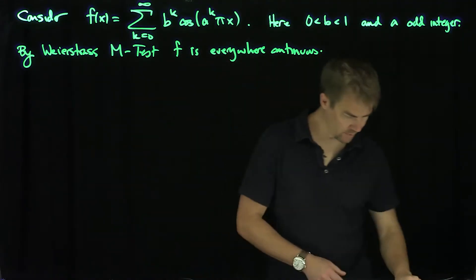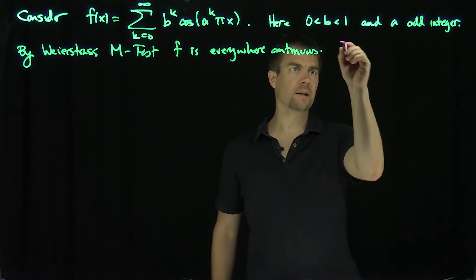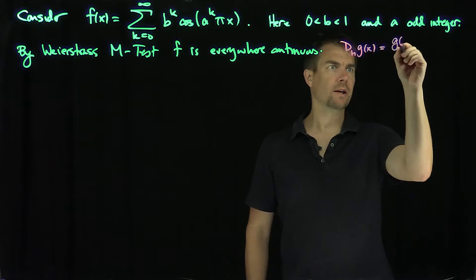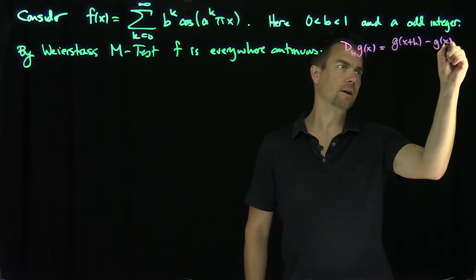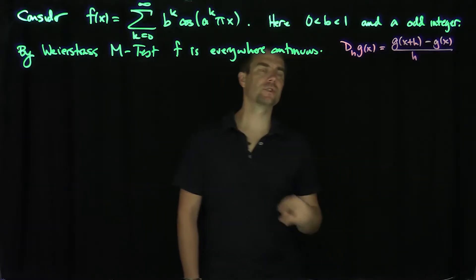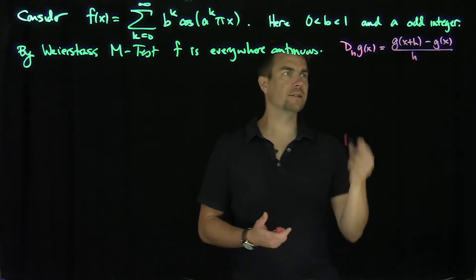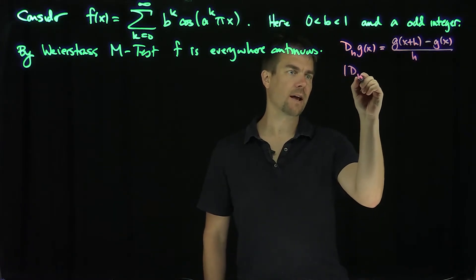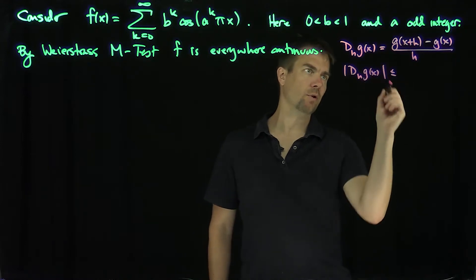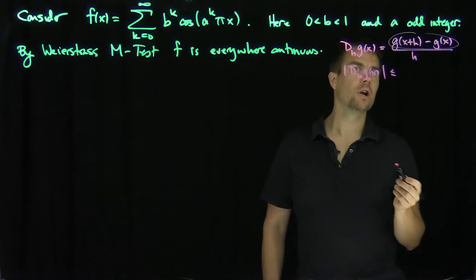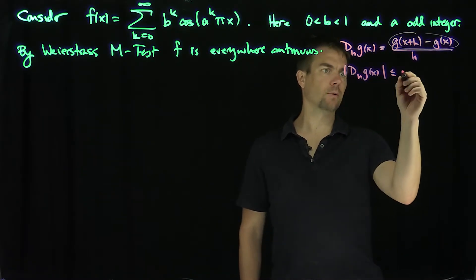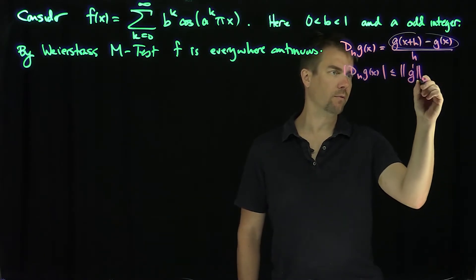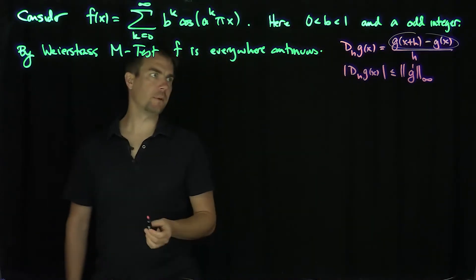Now I'm going to build some notation. I'm going to let d_h of g(x) — this operator d_h — be a forward differential quotient: g(x+h) minus g(x) over h. A lemma about this: if g is everywhere differentiable, then by the mean value theorem, d_h g(x) is bounded by the L-infinity norm of g prime.